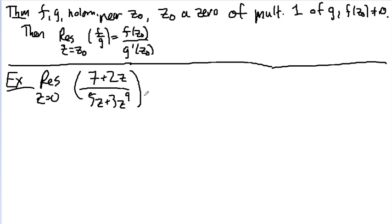Alright, so the first thing I need to do is make sure that the top doesn't go to 0. If I plug in 0 at the top, I get 7, which is not equal to 0. So this part holds. Now I need to make sure it's a zero of multiplicity 1 at the bottom, and I can do that by factoring. The bottom becomes z times 5 plus 3z to the 8th. That's really z to the 1. And if I plug in 0 into just this thing, I get 5. So that tells me that it really is a zero of multiplicity 1.